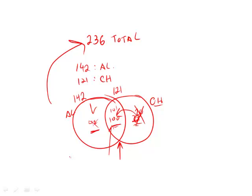And of course that will leave the remainder over here that only take algebra, but we don't care about them. We care about this number, the greatest possible number that take both, and that's 121. So that's what you enter into the box.